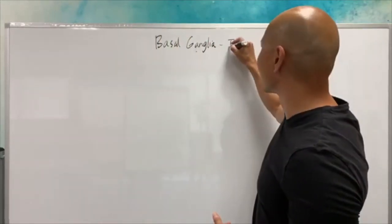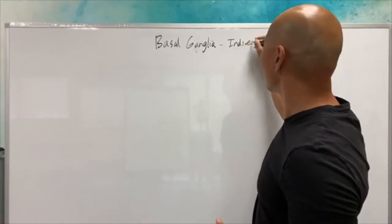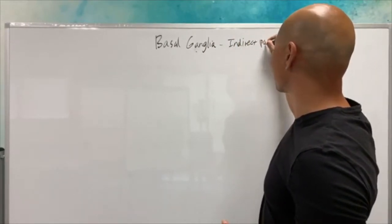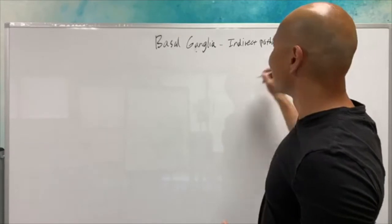There's an area called the indirect pathway or a pathway called the indirect pathway of the basal ganglia and this is basically the pathway that helps your body to suppress and inhibit things.